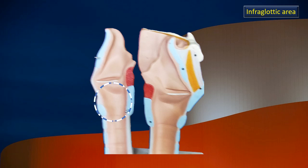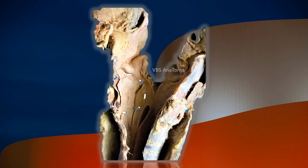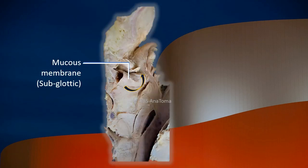Now we move on to the infraglottic area. Let me highlight the mucosa of the infraglottic area — the subglottic mucosa. In the same specimen, that area is the infraglottic area of one side. When I roll up the mucosa up to the vocal membrane — the subglottic mucosa has been removed and rolled up to the level of the vocal folds — the deeper structure revealed is called the conus elasticus, also known as the cricovocal membrane.